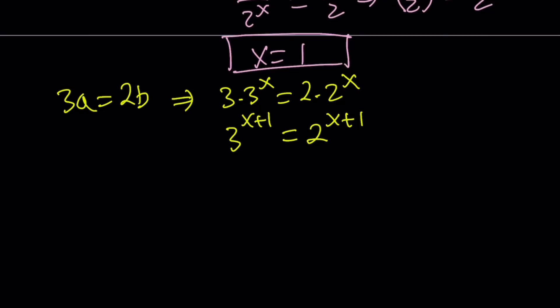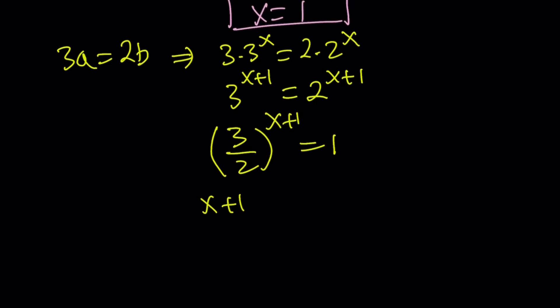Because with logs, if you have different powers, obviously that can happen. But when they're the same, there's no way this is going to work. But let's look at it in a more rigorous way. So we can write it like this: 3 over 2 to the power x plus 1 equals 1. And from here, we can safely say that the exponent must be 0. x plus 1 equals 0, and that implies x equals negative 1 as the other solution.